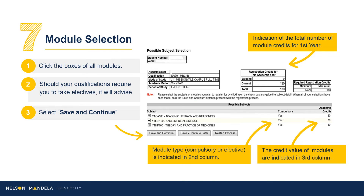Step 7 — Module Selection: On-screen, some information to note. Qualification information is found in the top left-hand corner, with the total number of credits visible in the top right-hand grid. A list of modules will reflect below, confirming whether the module is compulsory and its credit value. At the end of your academic year, the credit value for your first year indicated in the top right-hand grid should be the goal worked toward.